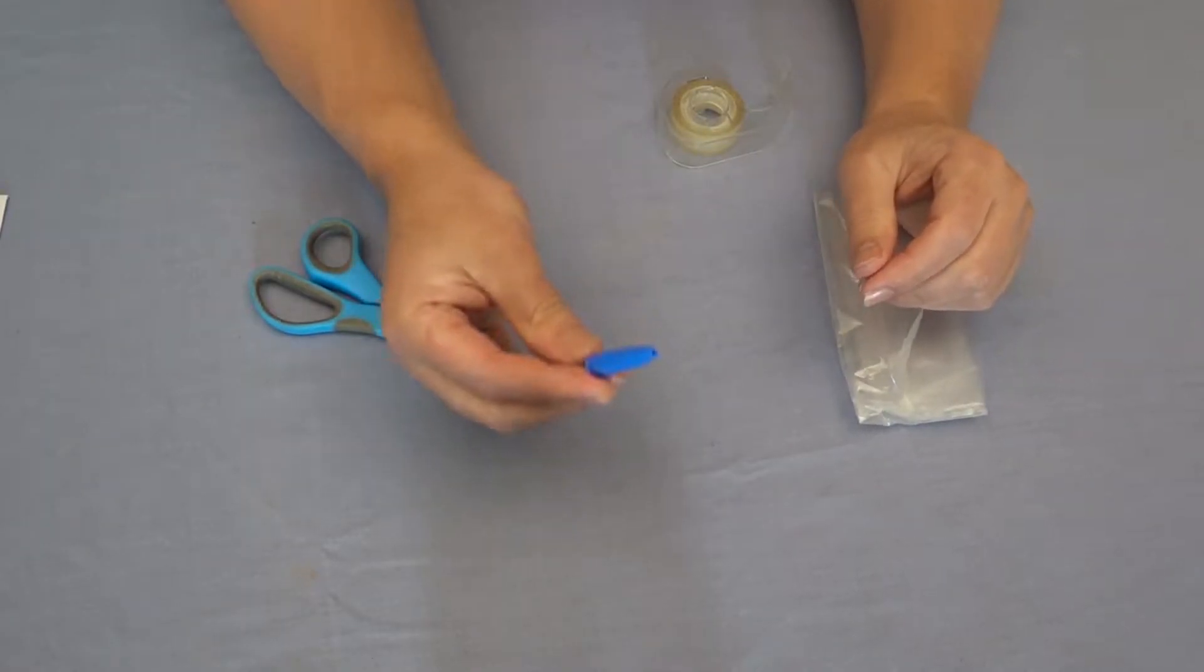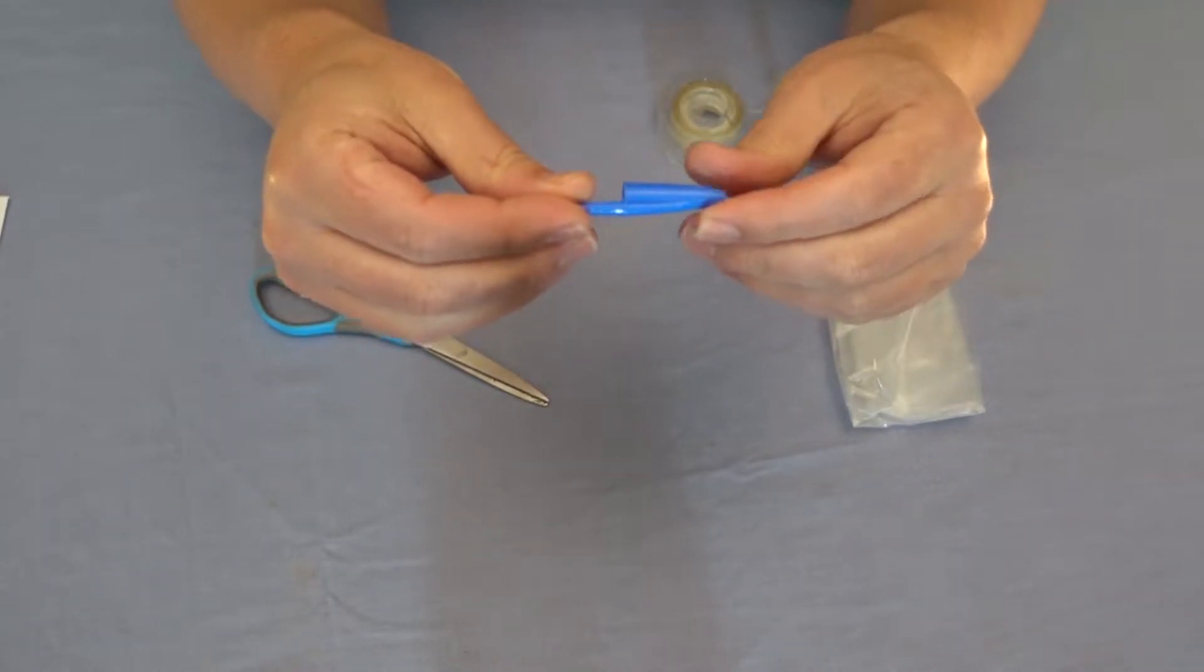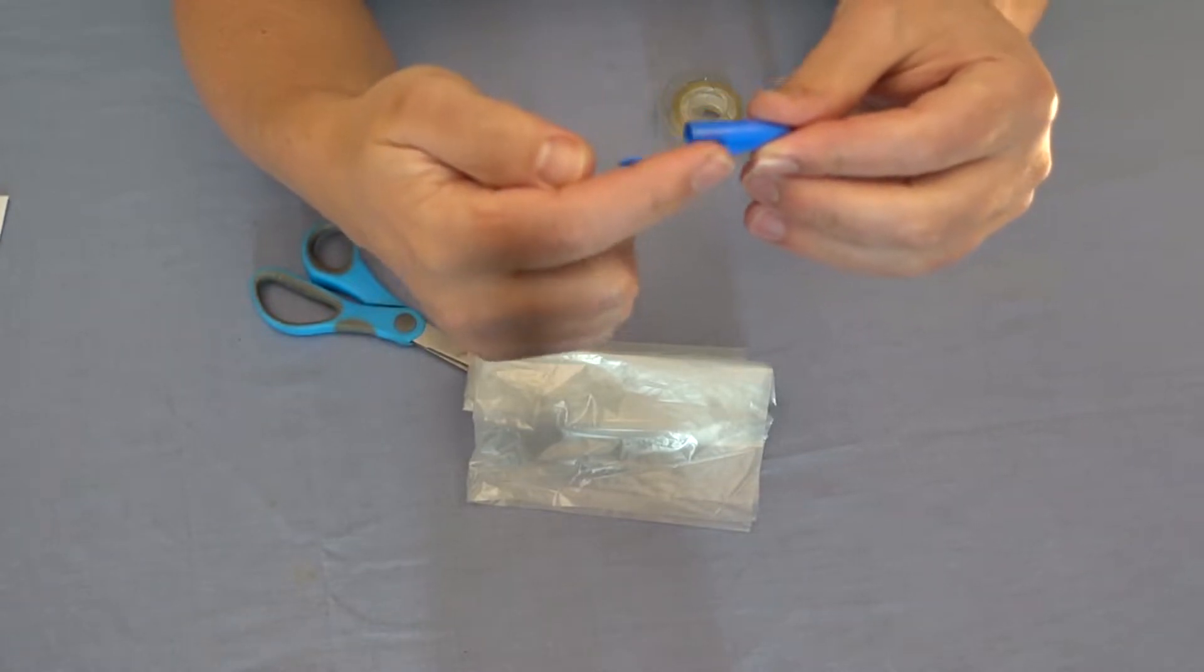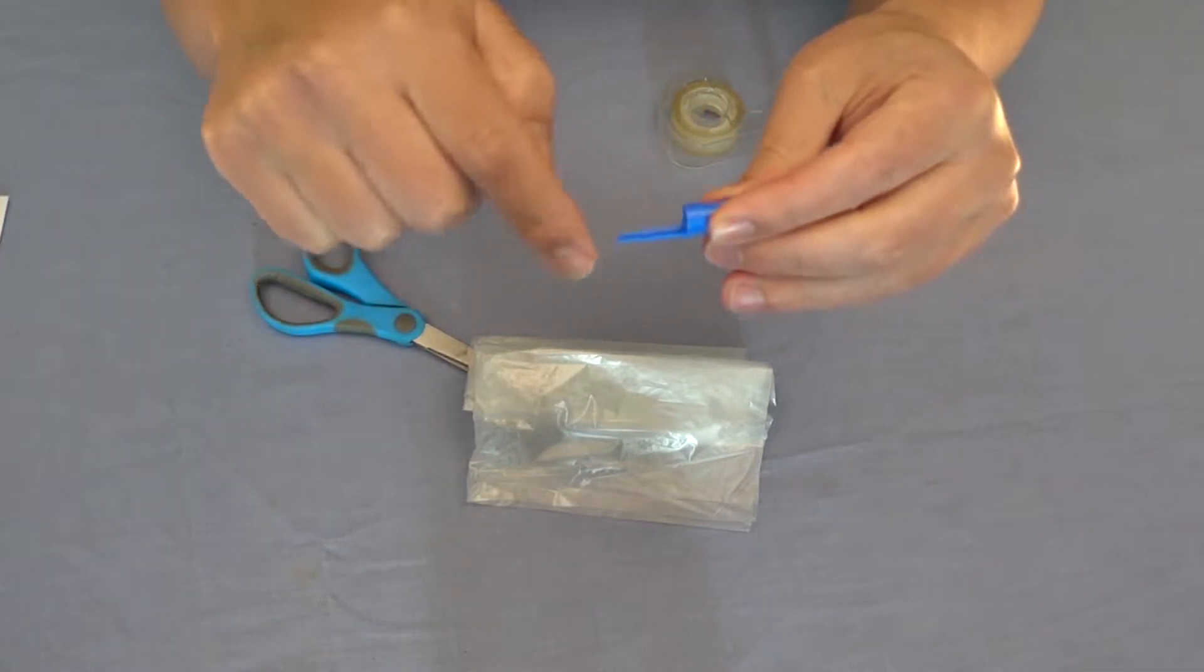The first step is to make our jellyfish which we're going to make out of our pen lid. Now to do this, I'm going to cut a strip of this plastic and wrap it around the jellyfish like a skirt. I'm then going to cut it into strips so it hangs down like tentacles and keep it all attached with my tape.